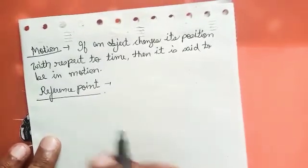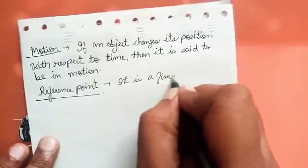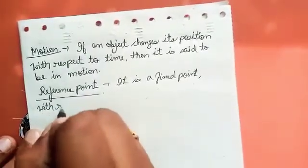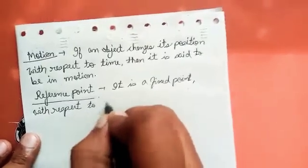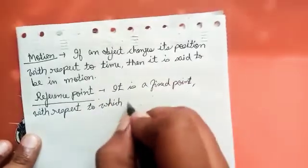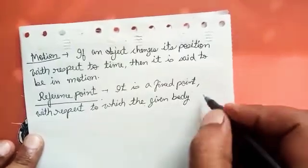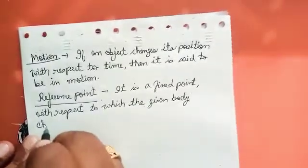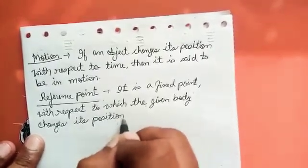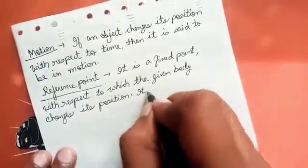So if I write the definition, it will be like this: It is a fixed point with respect to which the given body changes its position. It can also be called as origin.